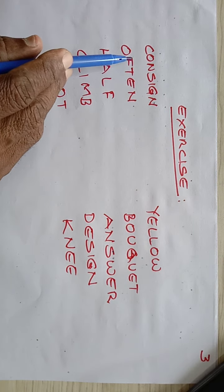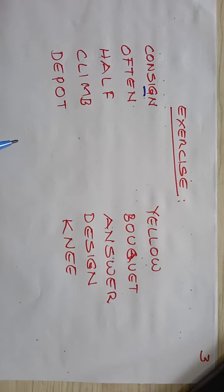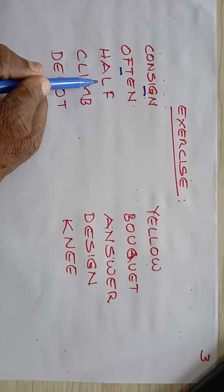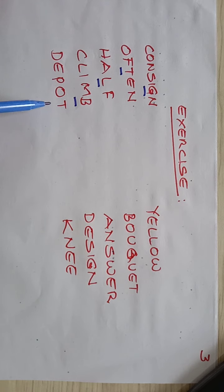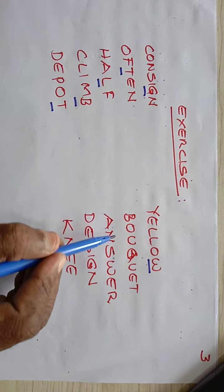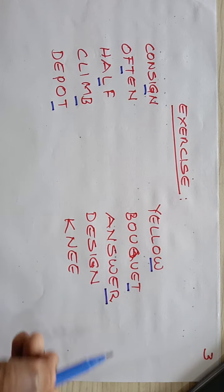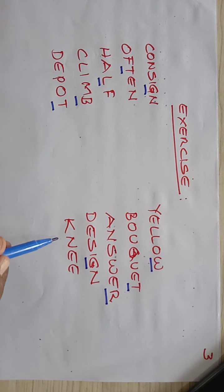Consign — G is silent. Often — T is silent. Half — L is silent. Climb — B is silent. Depot — T is silent. Allow — W is silent. T is silent. Answer — R is silent. Design — G is silent. Knee — K is silent.